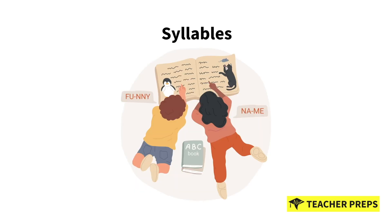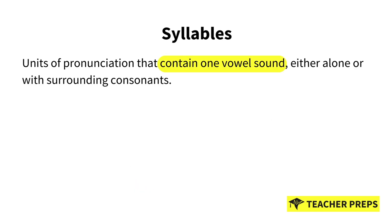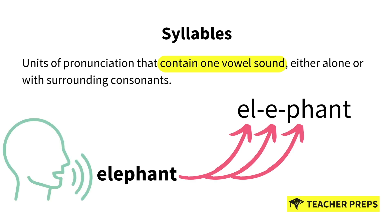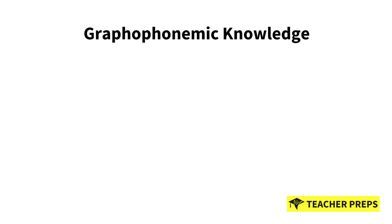Next, we'll talk all about syllables, which are units of pronunciation that contain one vowel sound, either alone or with surrounding consonants. Breaking words into syllables helps students with word recognition and pronunciation. For example, the word 'elephant' has three syllables: el-e-phant.